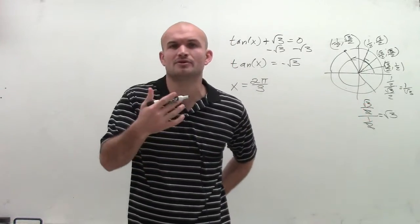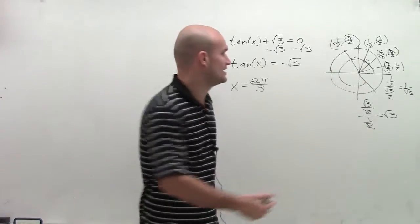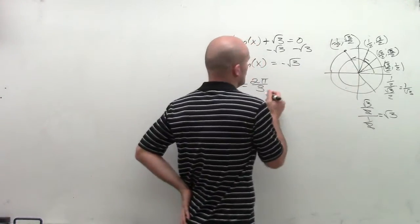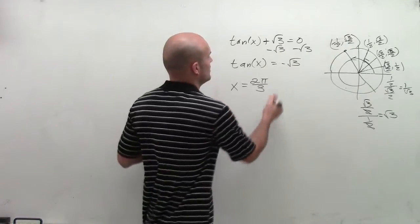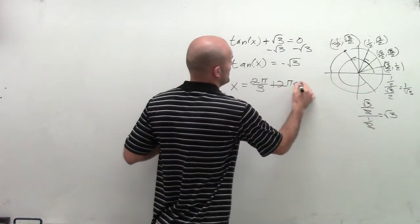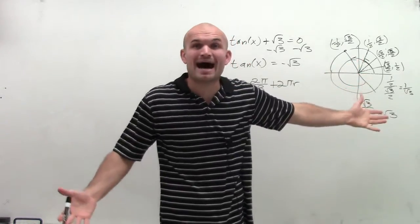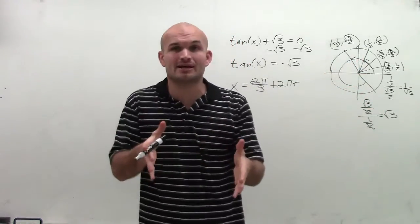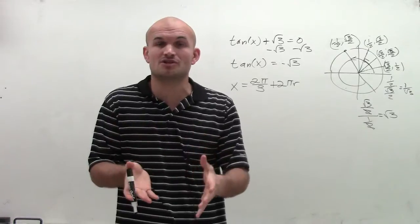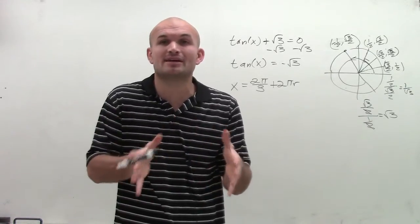And you can think, all right, so remember coterminal angles. If you add 360, you're going to get the exact same angle. So we could say that, well, you could add 2π to this. But we have another angle here. And the distance from this angle to this angle is π. Because remember, the period of the tangent graph, or the tangent function,